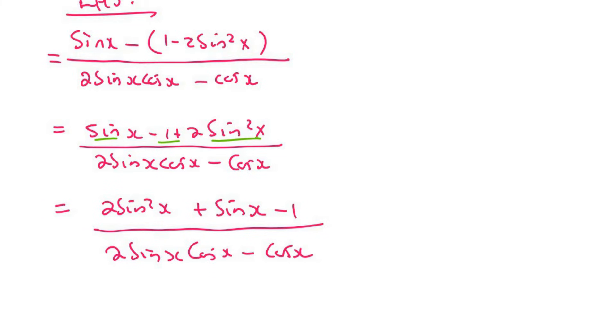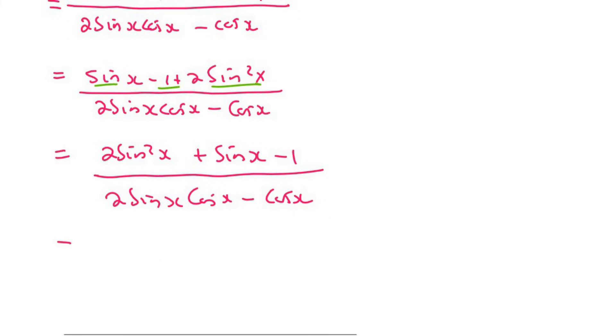So we're going to factorize this top one as a trinomial. And so that's going to obviously end up with two brackets. The one will have a 2sinx. And you might have to pause the video just to make sure you understand how I got everything. But this one's going to be plus 1 like that and this one would be minus 1.